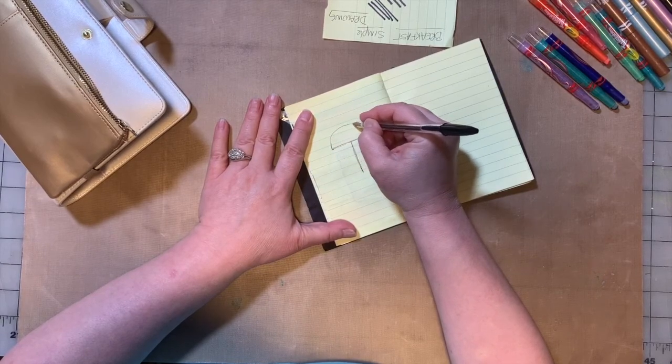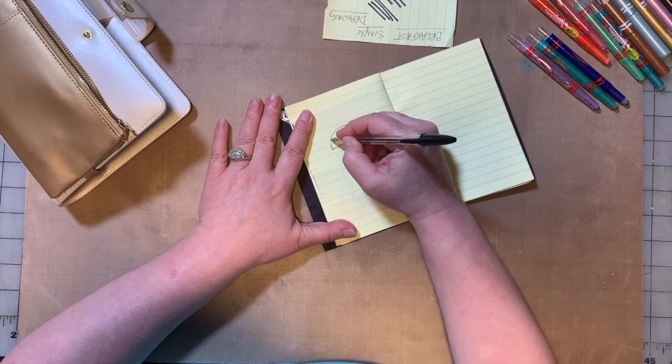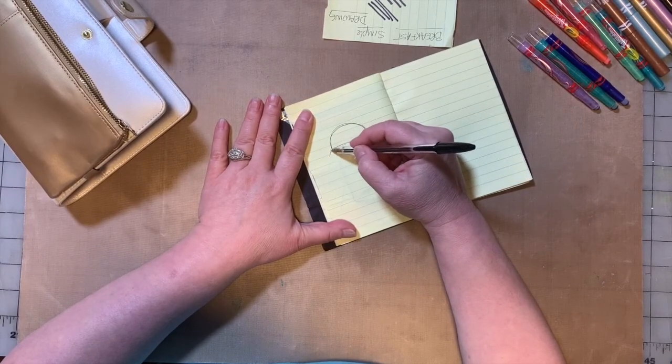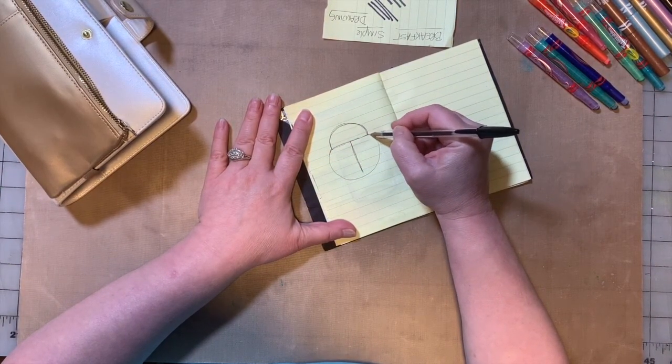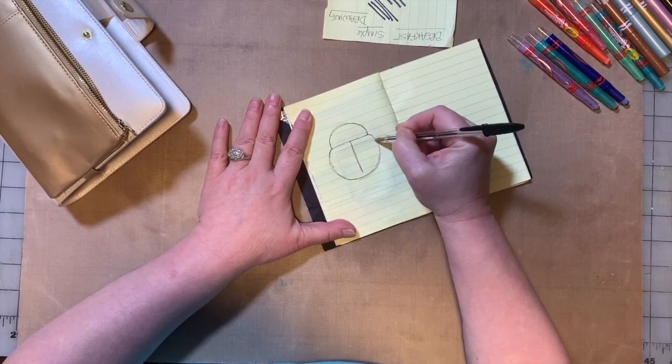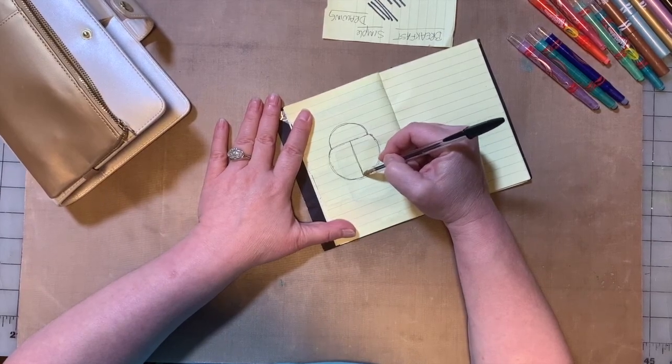Then I'm going to connect with a curvy line, a half circle the top of the T. Then I'm going to connect with a circle shape the bottom of the T. Again, you'll notice I'm using loose sketchy lines. I'm going to bring this one down more.